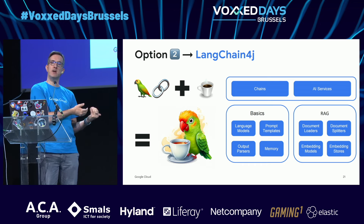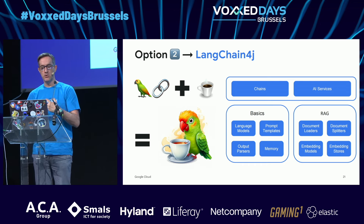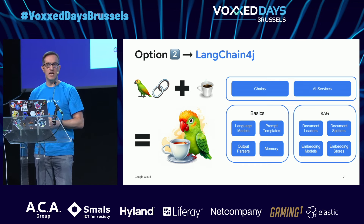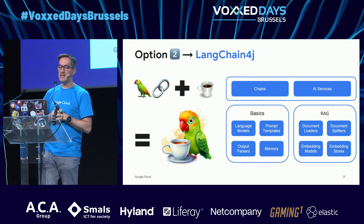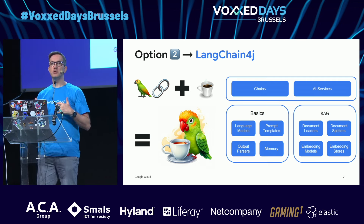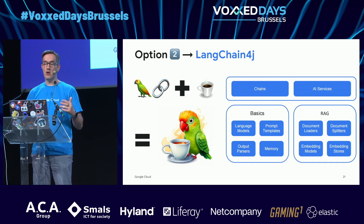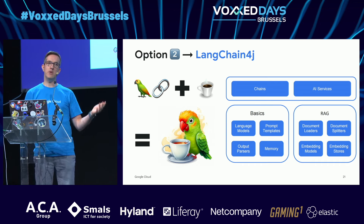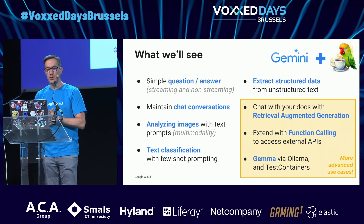If you use the Gemini Java SDK, you'd have to code more advanced use cases in a more verbose way. LangChain4J makes those advanced scenarios easier, so I was interested in using LangChain4J with Gemini — that's the example I'm going to show you.